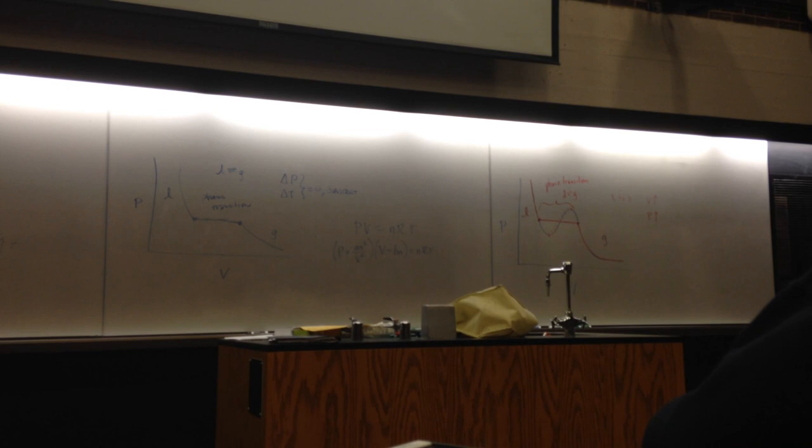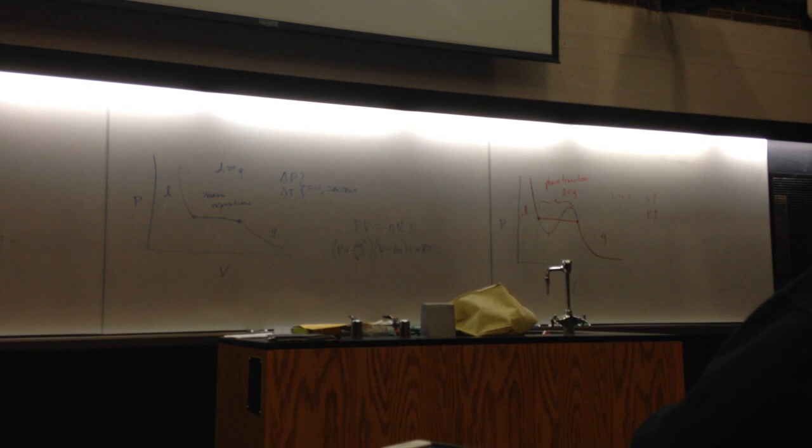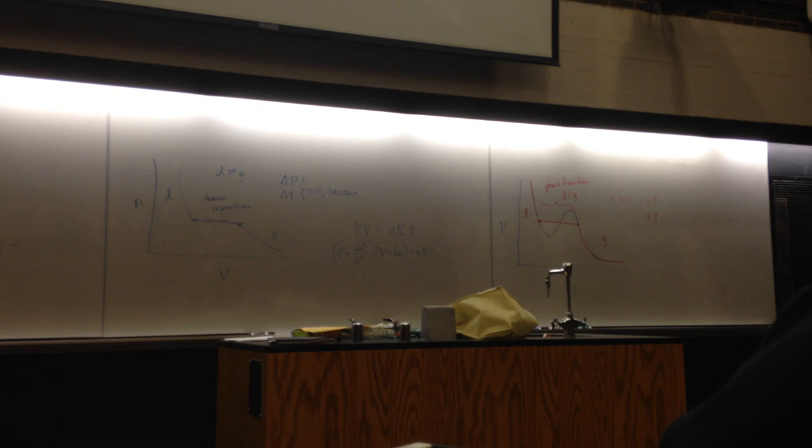But this equal area construction allows us to draw a line through here, which gives us the real gas behavior in the phase transition. Van der Waals is the simplest theory, the simplest formula. There are a lot of formulas for real gases. They get very hairy. This is the simplest one that predicts the phase transition and incorporates the fact that you have attractive forces. Is there anything else you'd like to go over? Any questions?